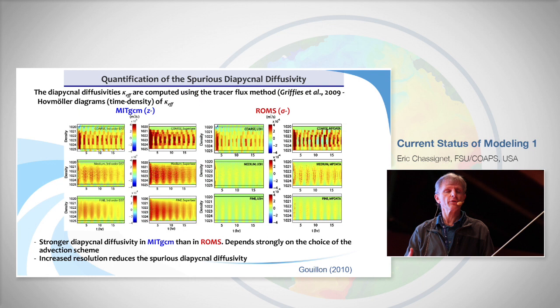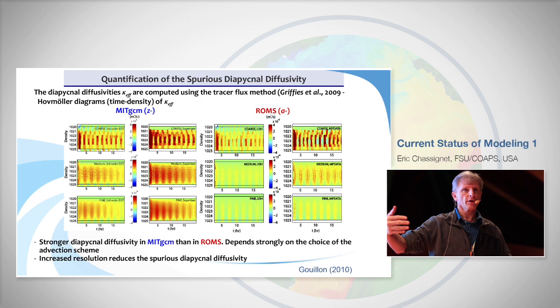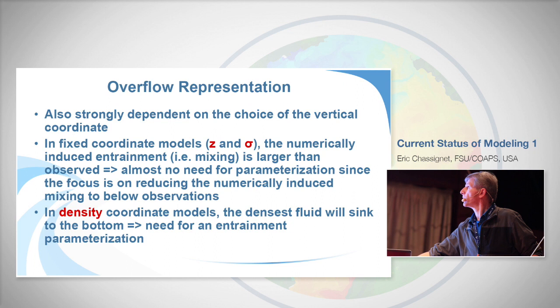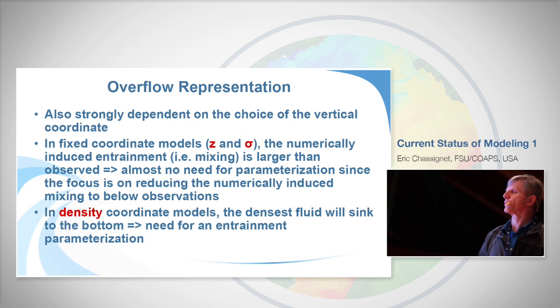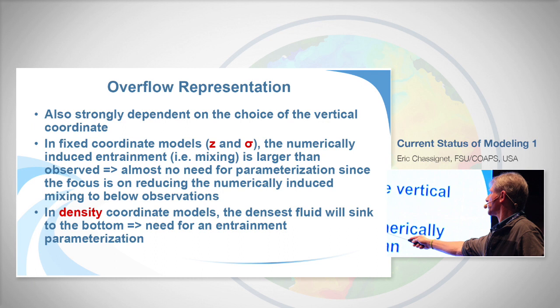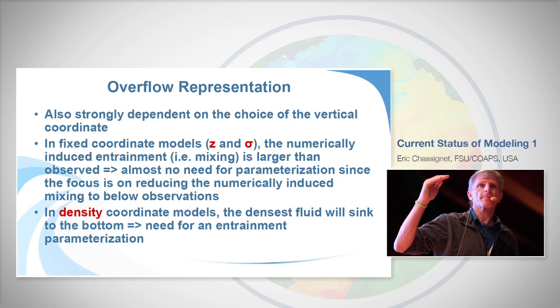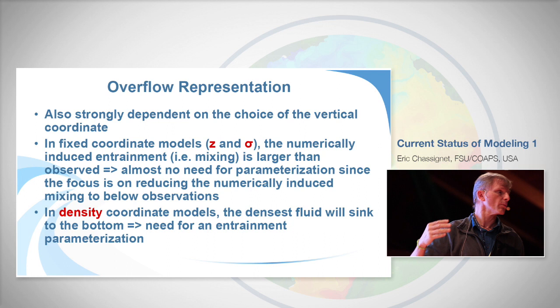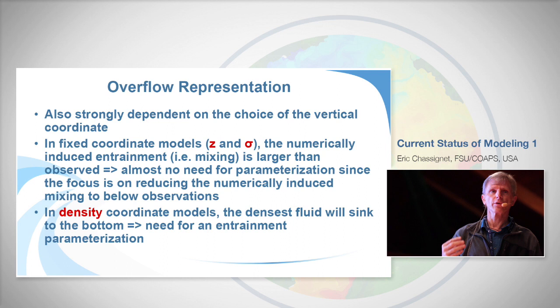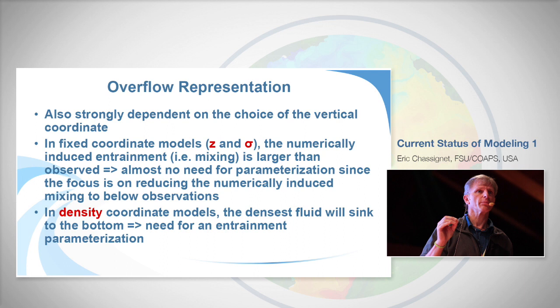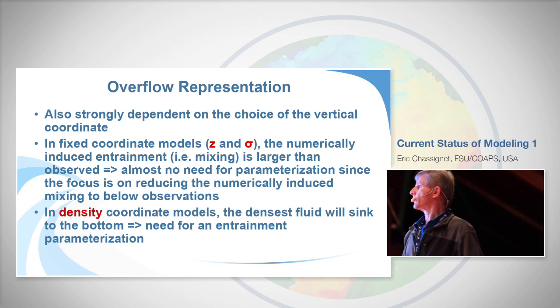If you're interested in short forecasts or a well-mixed area, numerically-induced diapycnal mixing doesn't matter much. But if you are performing long-term integration, it does matter. This issue is linked to the representation of topography in models, which depends strongly on the vertical coordinate. In a fixed coordinate like Z or terrain-following, numerically-induced entrainment can often be much, much larger than what is observed. The main goal is to try to reduce the numerically-induced entrainment to levels that are slightly less than observations.